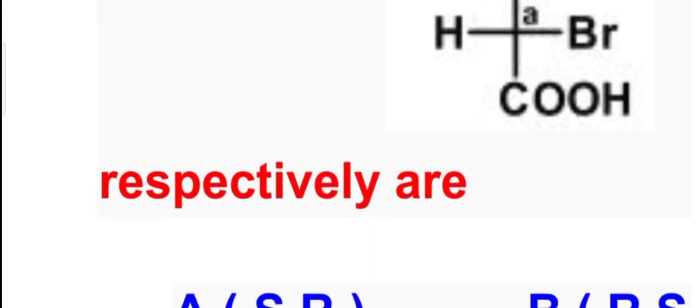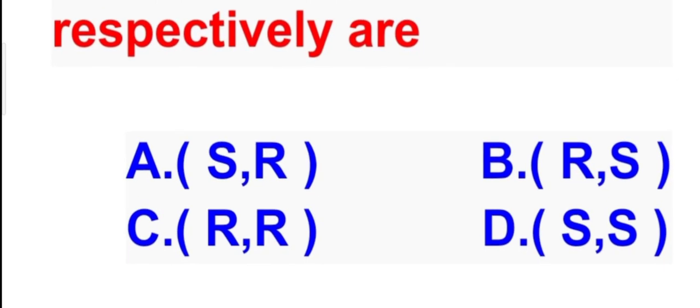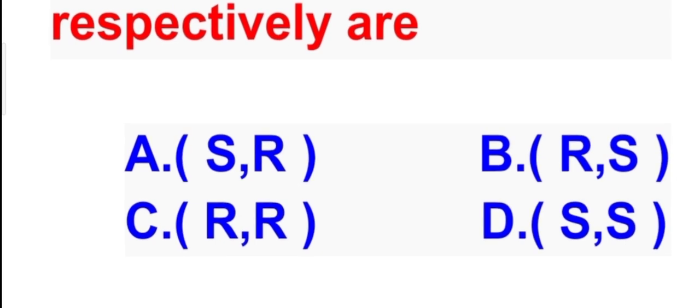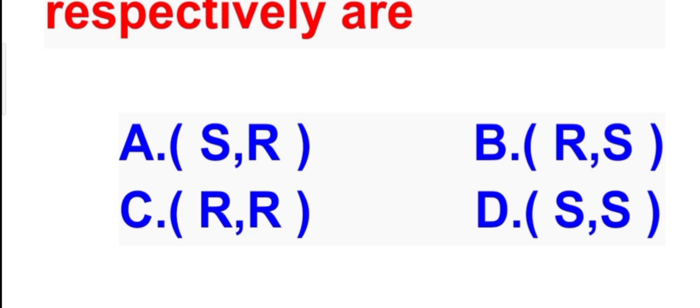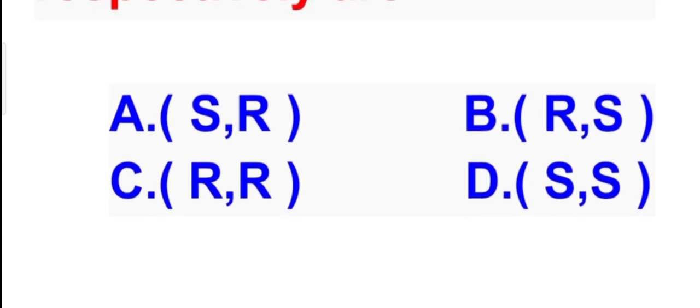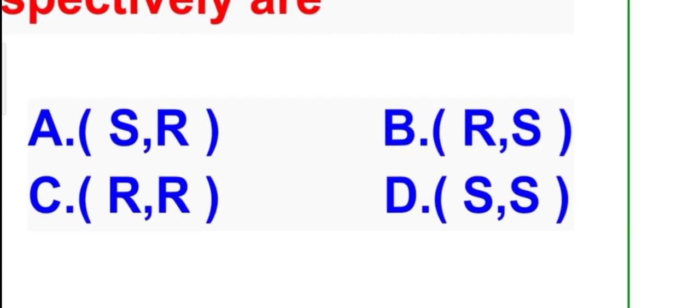Now we have to identify the nomenclature of these two chiral centers. Options are: S,R; R,S; R,R; and S,S. Now how to solve this type of question or how to analyze this? Very simple trick.